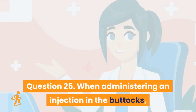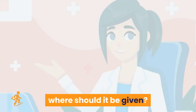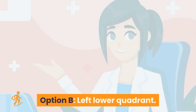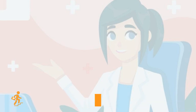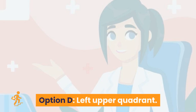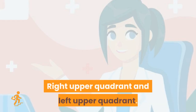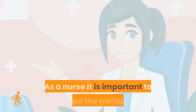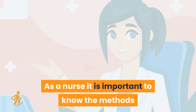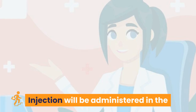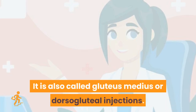Question 25. When administering an injection in the buttocks, where should it be given? Option A: Right Lower Quadrant. Option B: Left Lower Quadrant. Option C: Right Upper Quadrant. Option D: Left Upper Quadrant. The correct answer is Options C and D: Right Upper Quadrant and Left Upper Quadrant. The injection will be administered in the upper outer quarter of the buttocks, also called gluteus medius or dorsogluteal injections.